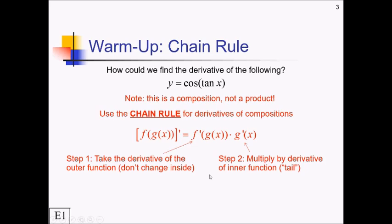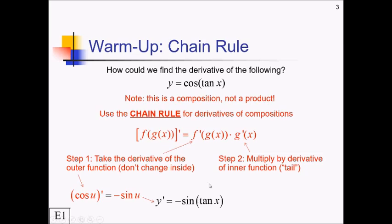Applying that to the cosine of tan of x problem: step one, derivative of the outer function — we're taking the derivative of cosine of something, which is negative sine of something. The something is just the inner function unchanged, so we get negative sine of tan of x. Step two, multiply by the tail — the derivative of tangent, which is secant squared of x. So our derivative is negative sine of tan of x times secant squared of x. You've actually been using the chain rule all along — whenever you take the derivative of something with x, you multiply by the derivative of x, which is just one.